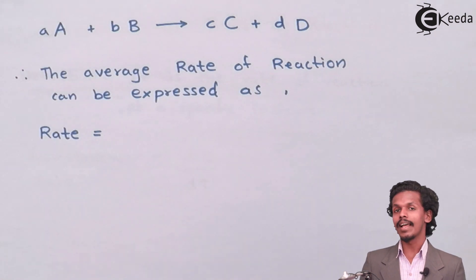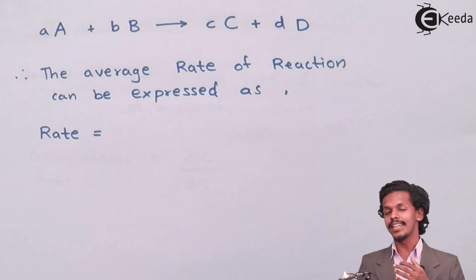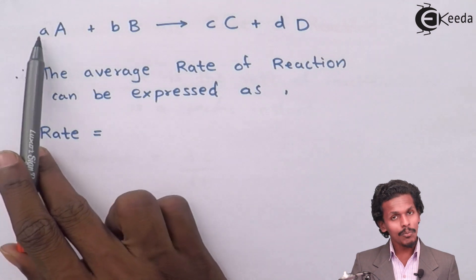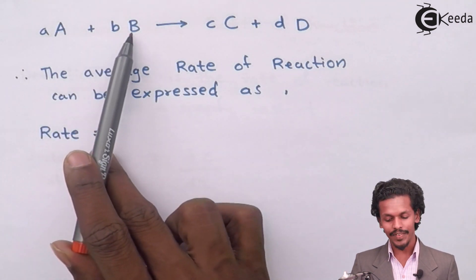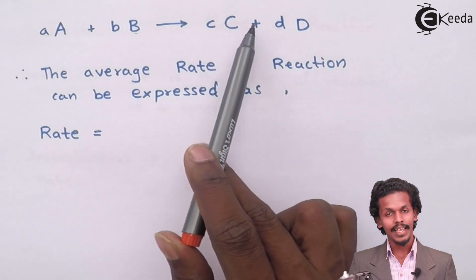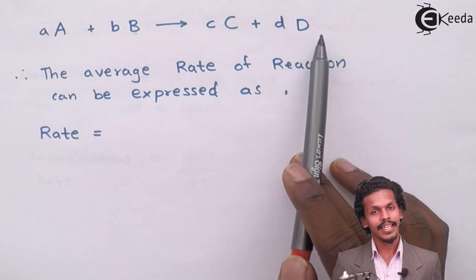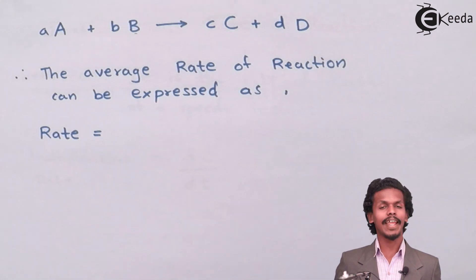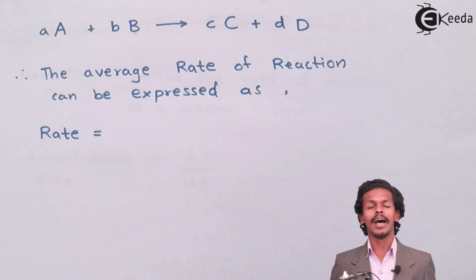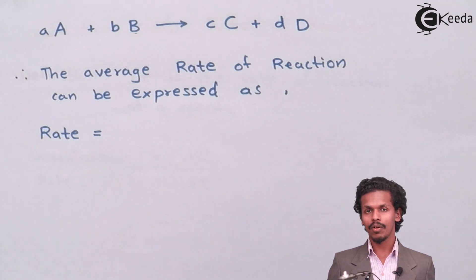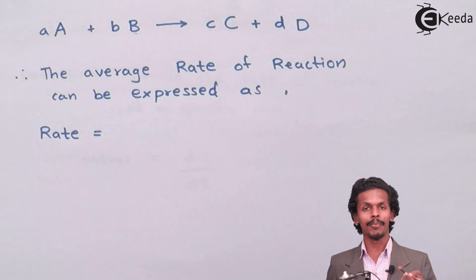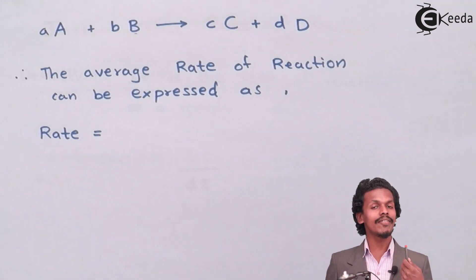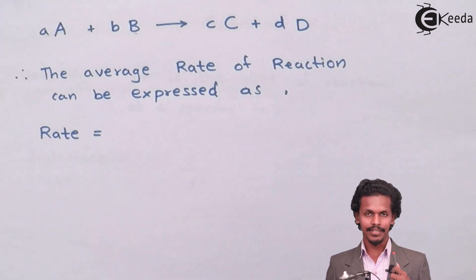Based on that, consider a general reaction where A moles of A reacts with B moles of B to give C moles of C and D moles of D. The values small a, small b, small c, and small d are the stoichiometric values, or the number of moles of the reactants or products respectively.